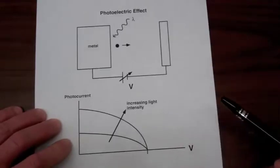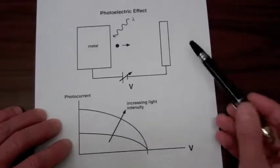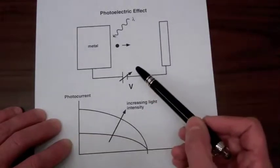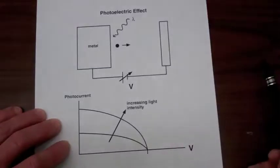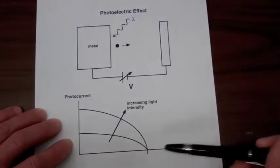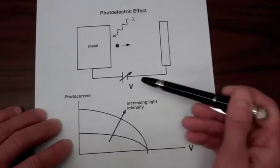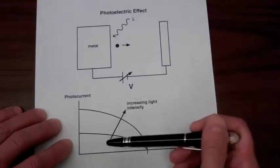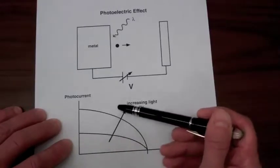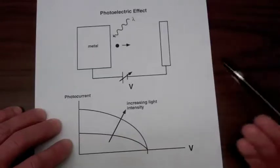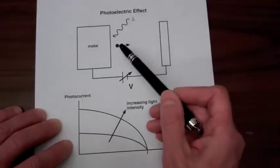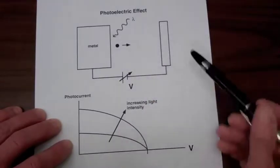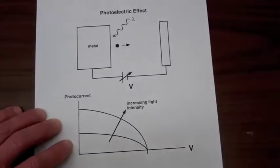From a classical physics point of view, one would think that increasing the intensity of the light would increase the kinetic energy of the electrons and hence increase the voltage required to shut off the photocurrent. But that is not what was observed. The exact same voltage and hence the same potential barrier was required to shut off the photocurrent. The photocurrent would increase with the intensity, indicating more electrons were being emitted, but the maximum kinetic energy of the electrons was the same regardless of the intensity of the electromagnetic wave.